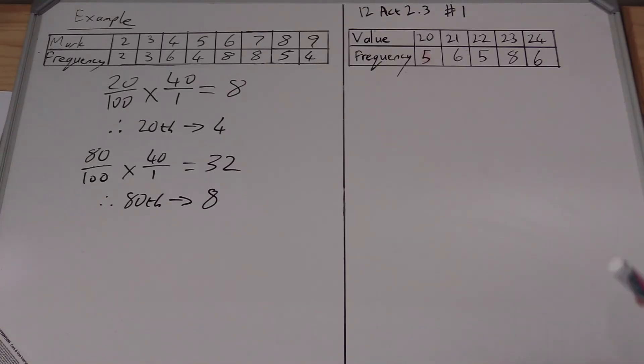If you're worried about whether you have the correct number in the frequency, just add it up. So 16, 24, 30. I started off with 30 values and I've got 30 as my total of my frequency table.